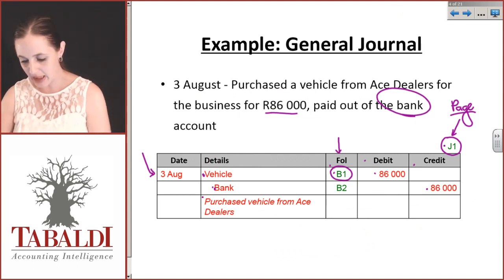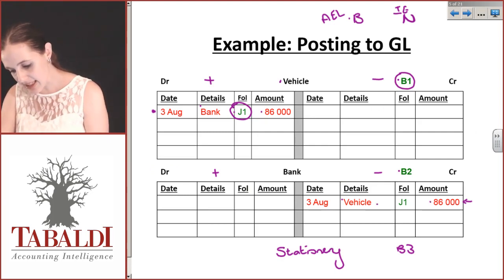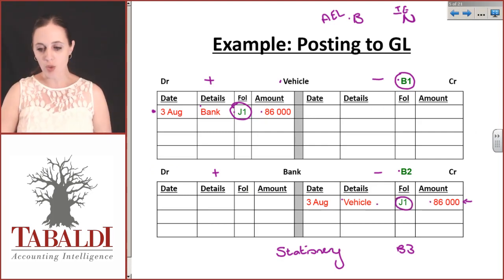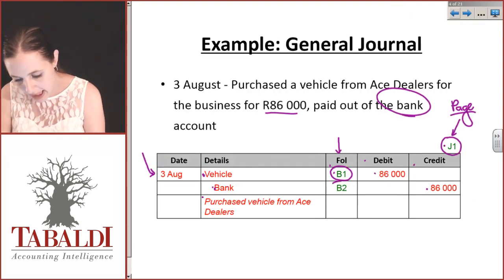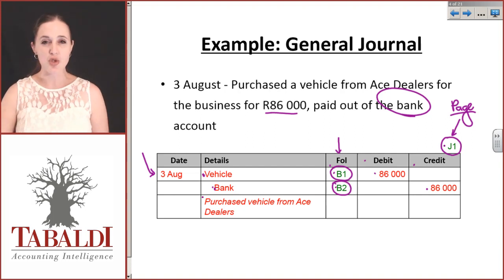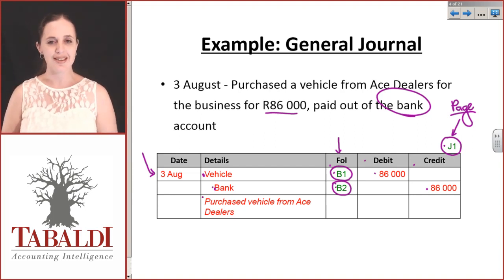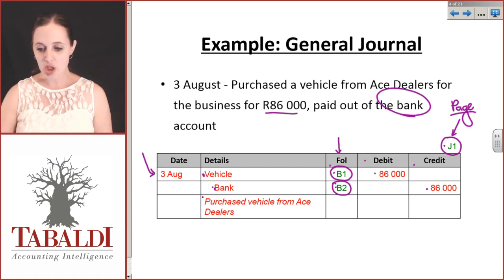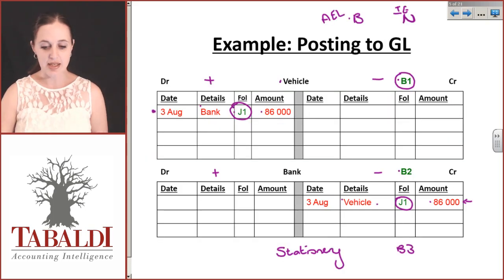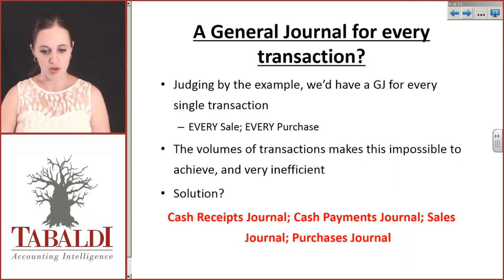Whenever we post anything to the general ledger we always cross-reference. So as I take that bank amount to the bank account, I write 86,000 and note it comes from J1. Then I come back and write B2 in the journal folio column. You've got to get used to this referencing. This gives us an indication of our general journal and our general ledger, and the reality is that any transaction can be journalized using a general journal.